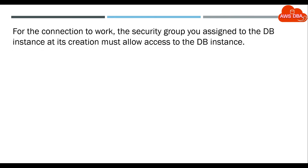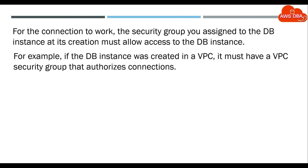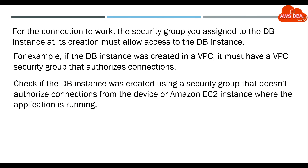For the connection to work, the security group you assigned to the DB instance at its creation must allow access to the DB instance. For example, if the DB instance was created in a VPC, it must have a VPC security group that authorizes connections. Check if the DB instance was created using a security group that doesn't authorize connections from the device or Amazon EC2 instance where the application is running.